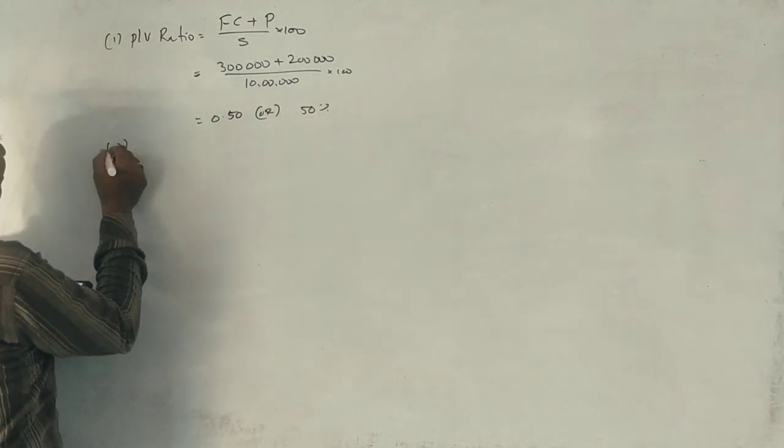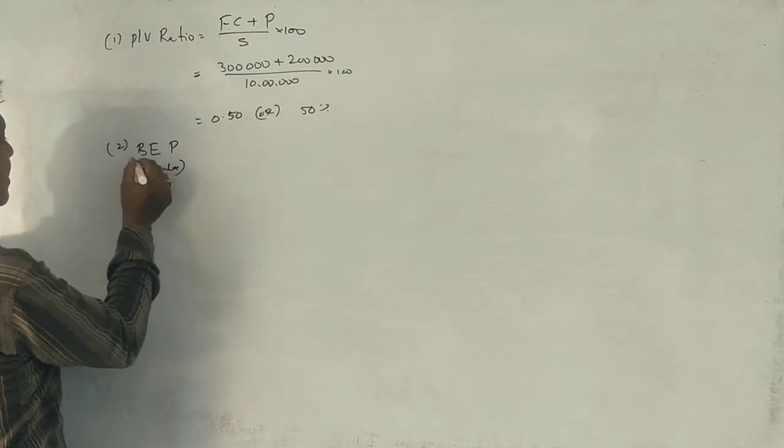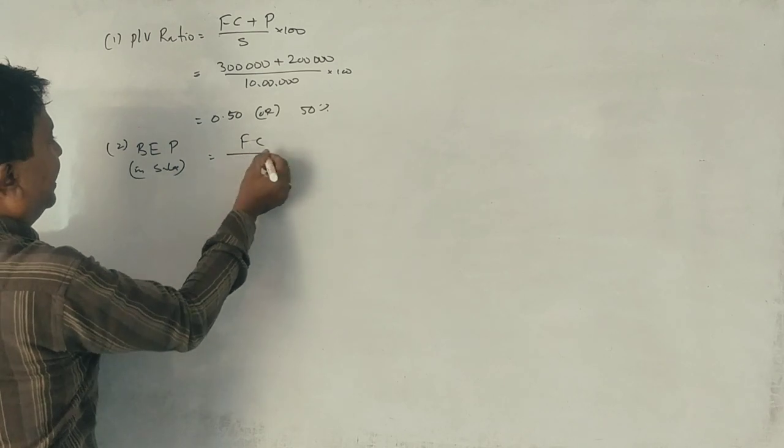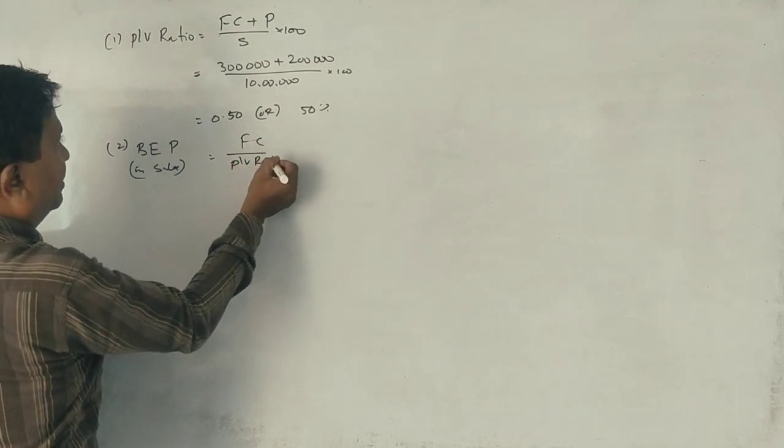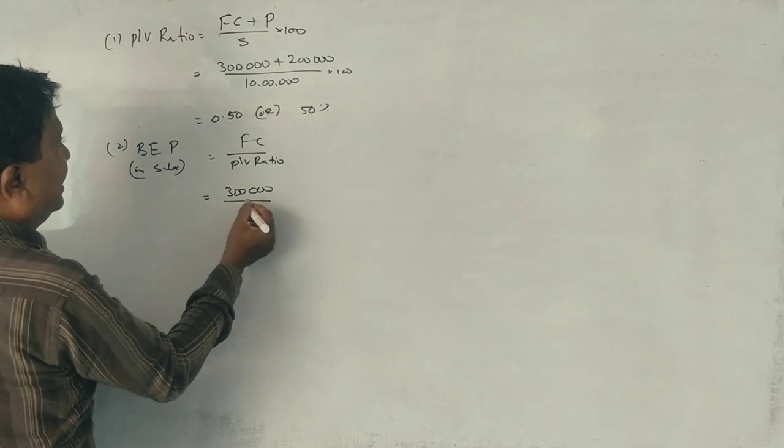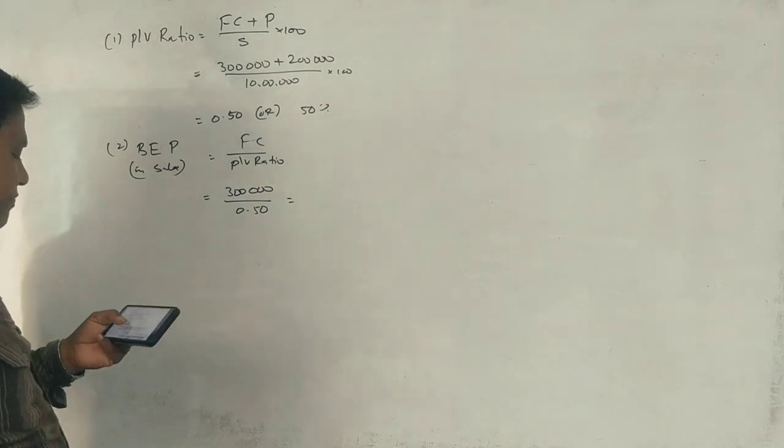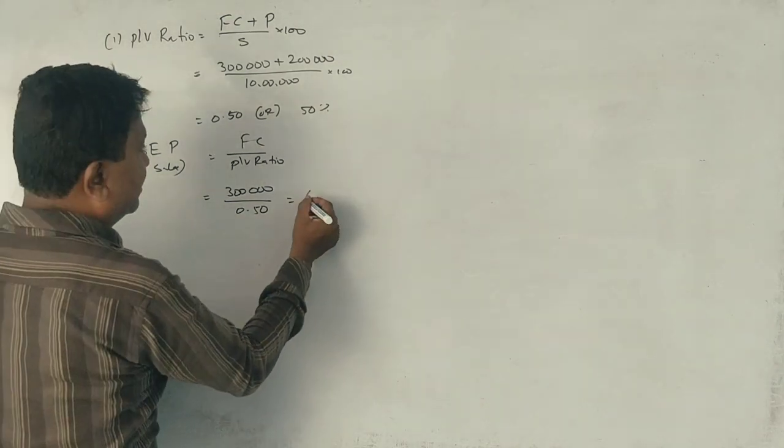The other thing, break-even point in sales. Fixed cost divided by P/V ratio. Fixed cost is 3 lakhs. P/V ratio is 50 percent. 6 lakhs. 6 lakhs. Poorly question.